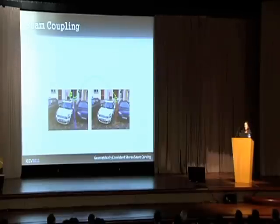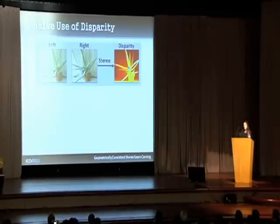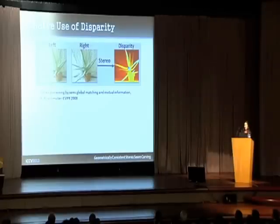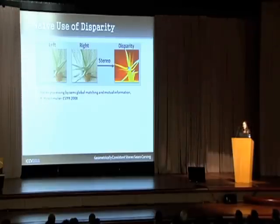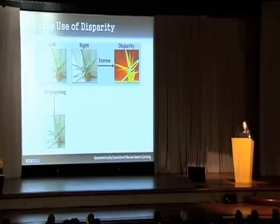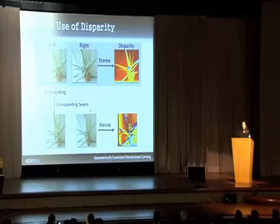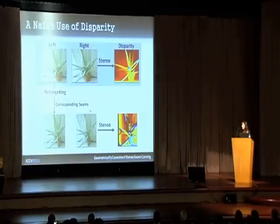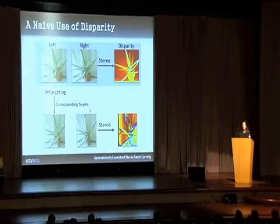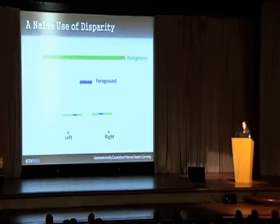We want to couple the left and right seams using the disparity. We use the SGM method to compute all input disparity maps. A naive use of the disparities is to apply single image retargeting on the left image and then remove the corresponding seams from the right image using the disparity. But the right image ends up distorted, and so is the interpreted 3D scene. This approach is insufficient to obtain a geometrically consistent result.